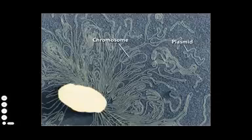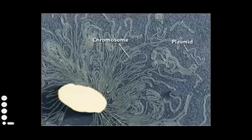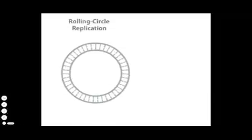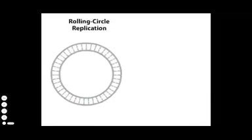For many plasmids, replication is not tied to chromosomal replication. Many plasmids replicate autonomously by a method called rolling circle replication.